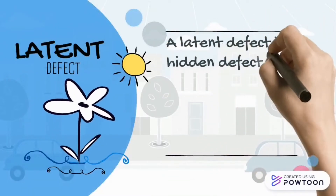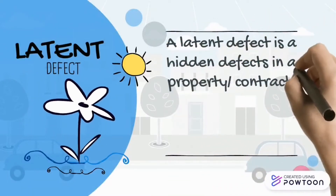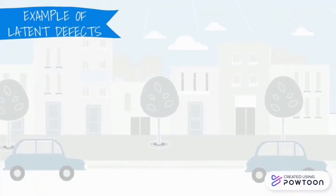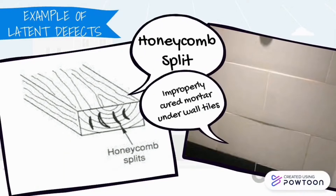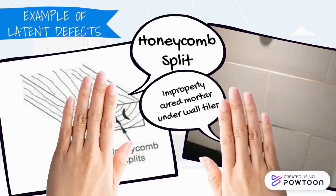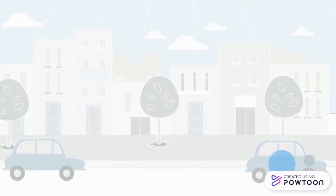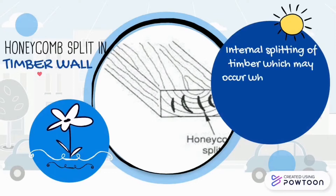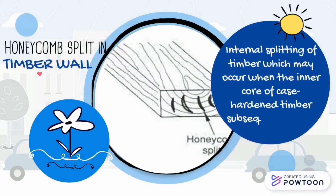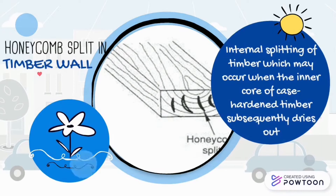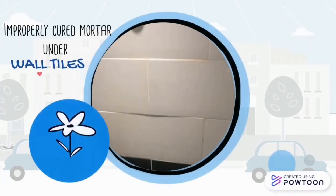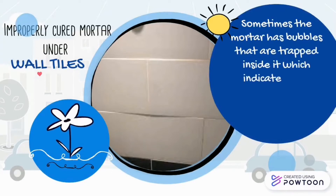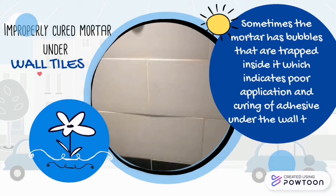A latent defect is a hidden defect in a property, contractor, or material that was not discovered during inspection. Examples of latent defects are honeycomb, split, and improperly cured mortar under wall tiles. Internal splitting of timber may occur when the inner core of case-hardened timber subsequently dries out. Sometimes mortar has bubbles trapped inside it, which indicates poor application and curing of adhesive under the wall tiles.